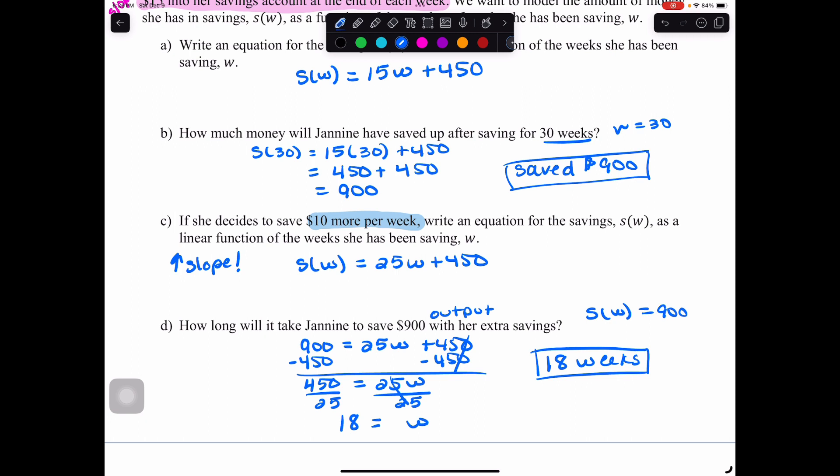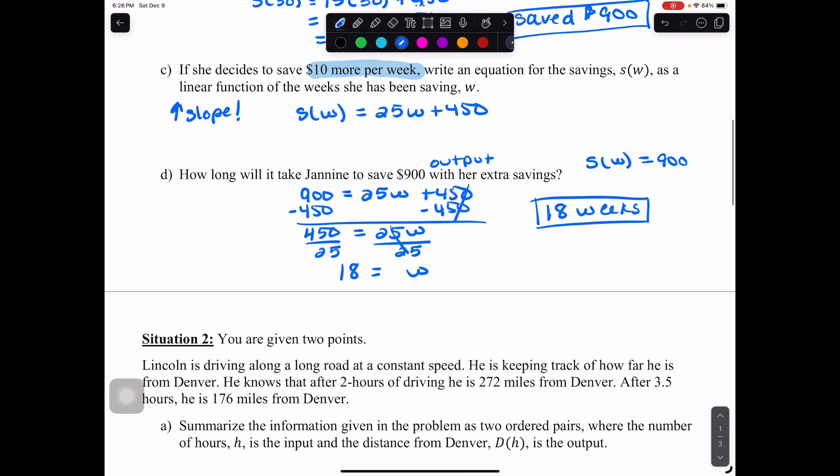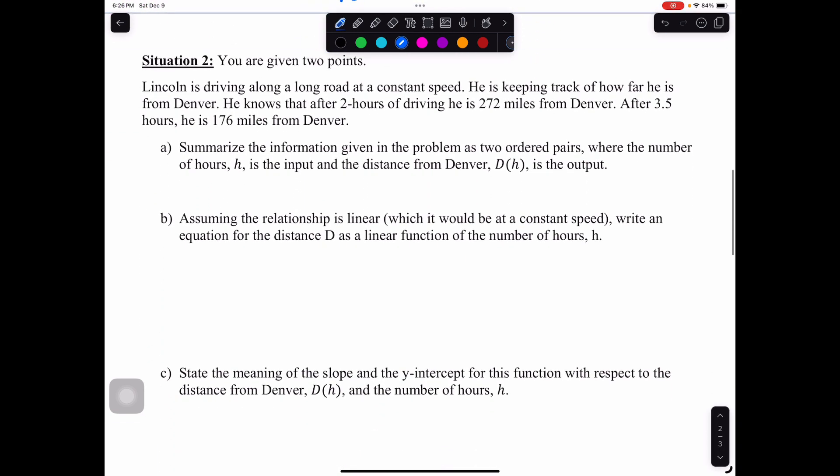You could do a direct comparison about what's happening now that she's saving more per week. Notice that when we answer these questions, we're labeling them so that our answers are describing things that were in the original description. Let's move on to situation two.